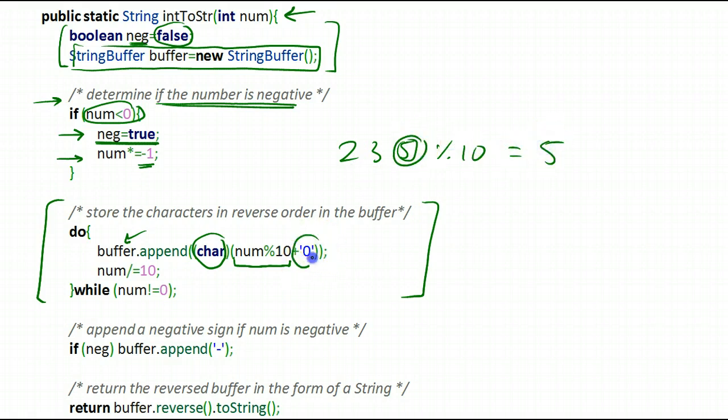And then I'm adding the character 0 to it. And this, in fact, gives me the character 5. And then I'm converting into a character, making sure that I specify that to the compiler. And then I append it to the buffer.